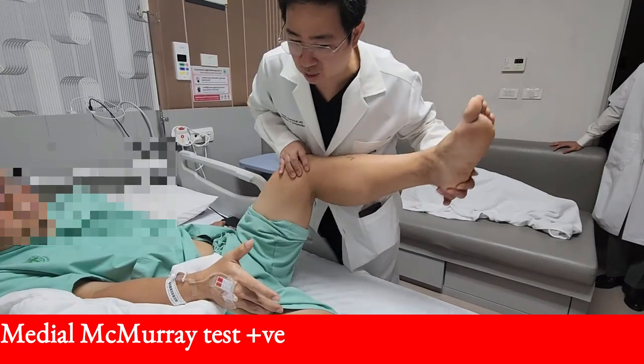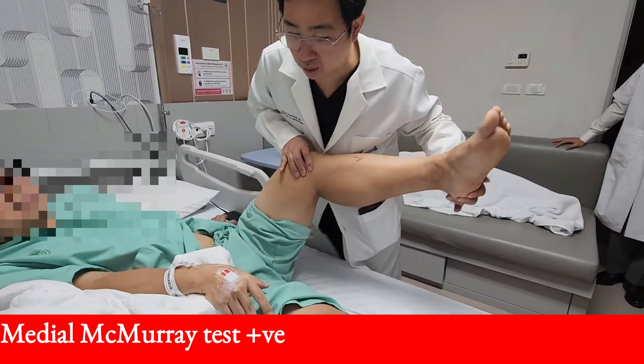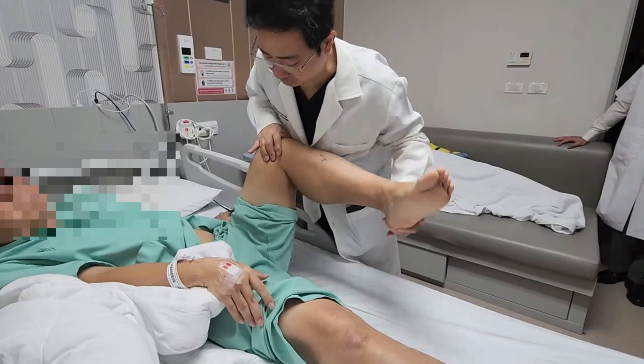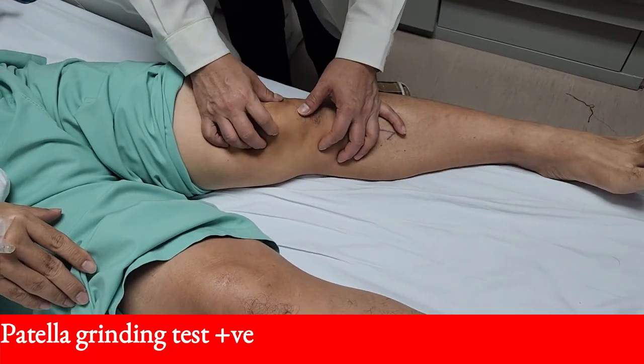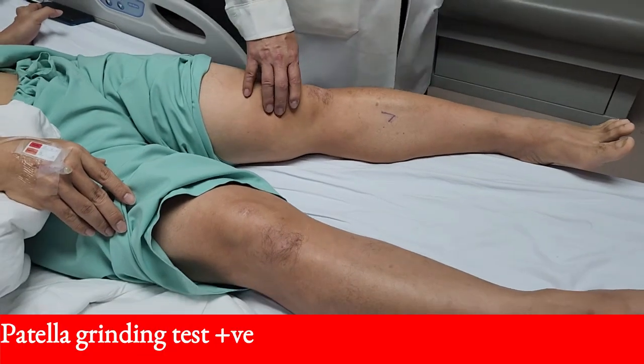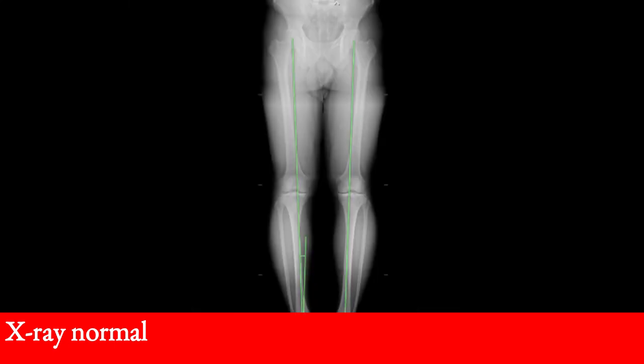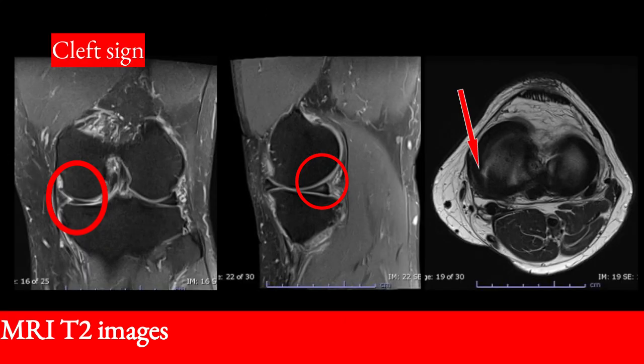Medial McMurray test is positive with pain. Patellar grinding test is also positive. The x-ray of the knee appears normal with no abnormalities. The long leg standing view shows normal alignment. This is the MRI T2-weighted images.